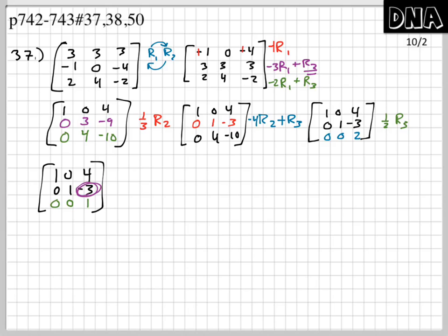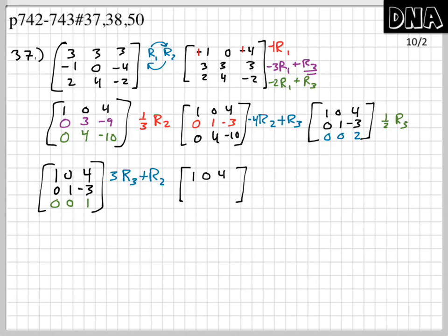To eliminate the −3 in row 2, I'll use row 3 since both of its first two entries are 0 — they won't disturb the existing pivots. Multiply row 3 by positive 3 and add to row 2. The 0s in columns 1 and 2 don't change; 1 × 3 + (−3) = 0. Row 2 becomes 0, 1, 0.